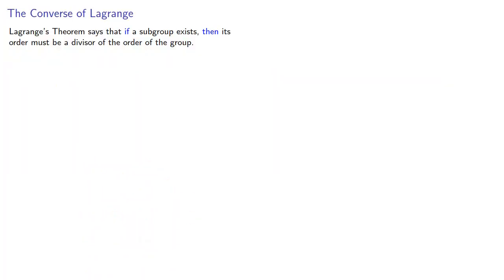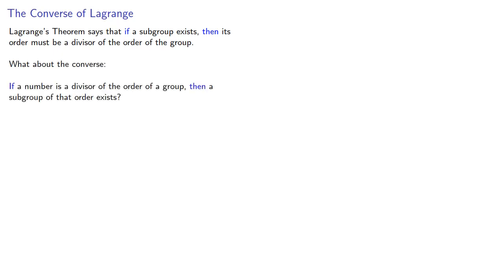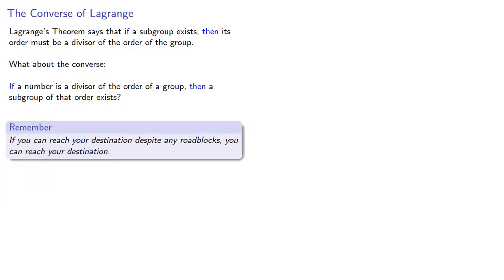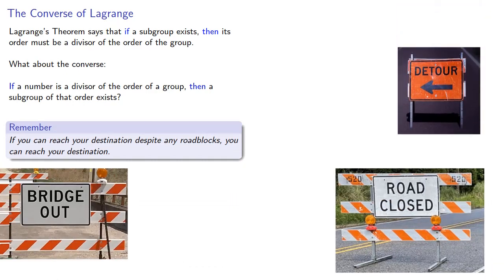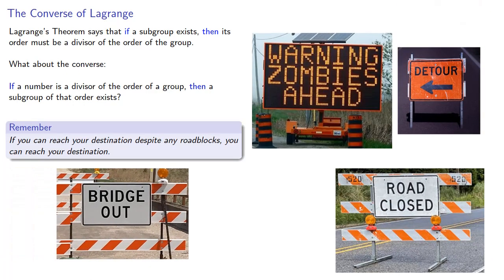Lagrange's theorem says that if a subgroup exists, then its order must be a divisor of the order of the group. But what about the converse? If a number is a divisor of the order of a group, does a subgroup of that order exist? Well, maybe. Here's an idea we might consider: if you can reach your destination despite any roadblocks, you can reach your destination.